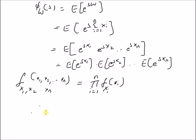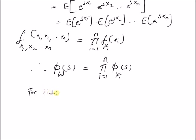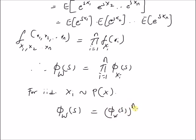Therefore, the moment generating function of the sum of n independent random variables is equal to the product of the moment generating functions of the individual random variables, phi_x_i(s). For IID random variables, that is when all x_i belong to the same distribution and have the same probability distribution, the moment generating function is the same for all individual random variables. Then the moment generating function of the sum W becomes phi_x(s)^n, since all individual MGFs are the same. Thanks for watching.